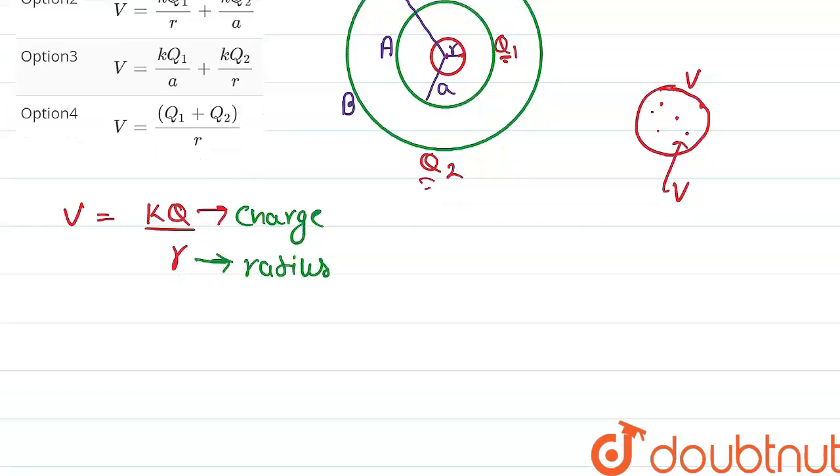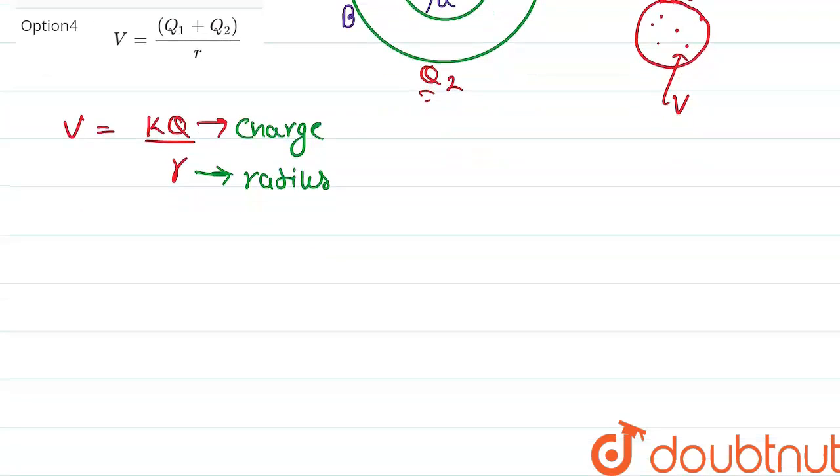Now, we will be calculating VA, that is potential at surface r due to shell a. That is kq1 upon a, since the radius is a.